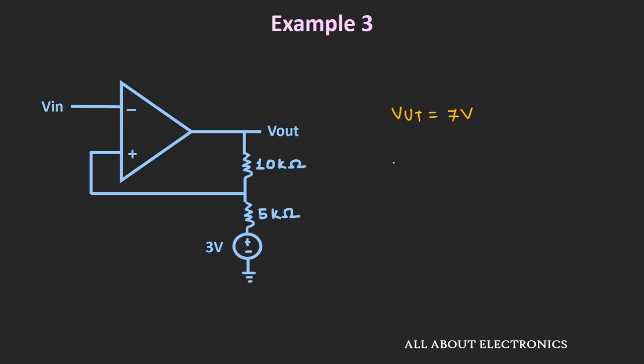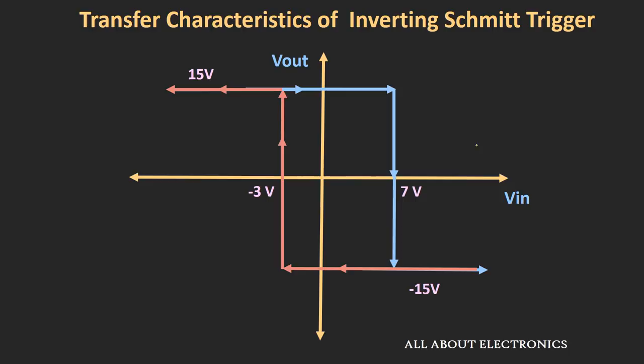Looking at the hysteresis curve for this Schmitt Trigger: whenever the input goes beyond 7V, the output transitions from +15V to −15V. Whenever the input goes below −3V, the output transitions from −15V to +15V.